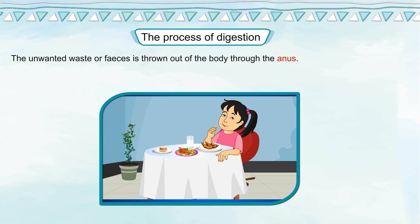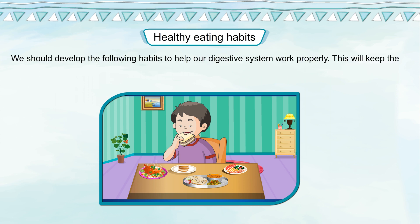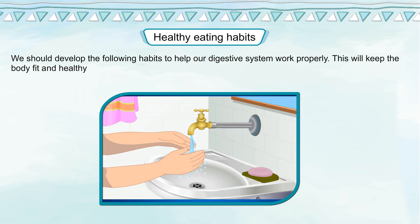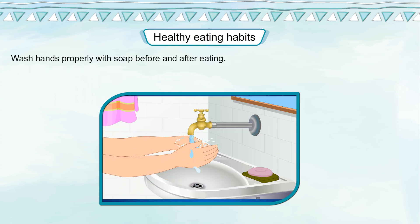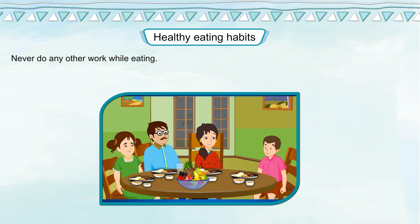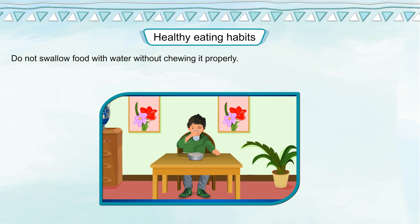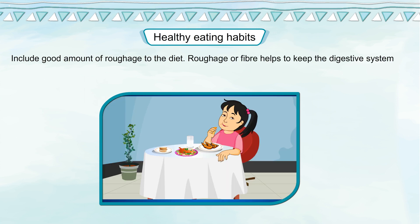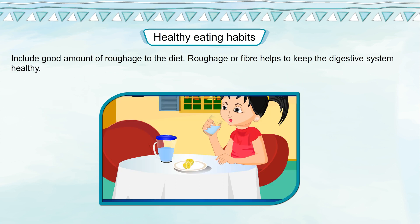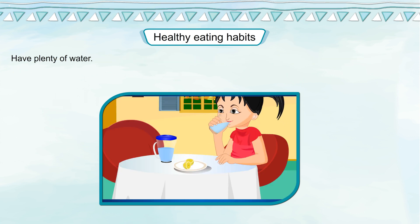Healthy eating habits to help our digestive system work properly: wash hands properly with soap before and after eating. Never do any other work while eating. Take small bites and eat slowly, chewing the food properly before swallowing it. Do not swallow food with water without chewing it properly. Include a good amount of roughage in the diet — roughage or fiber helps to keep the digestive system healthy. Have plenty of water.